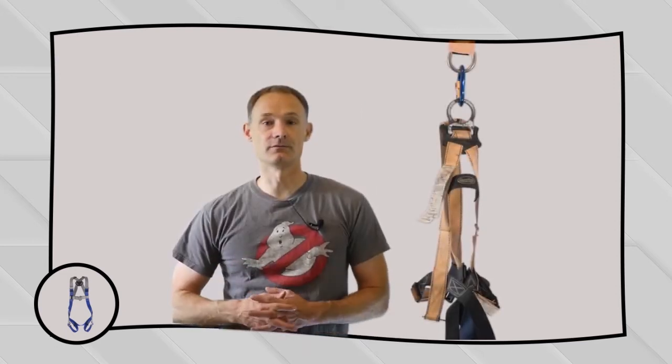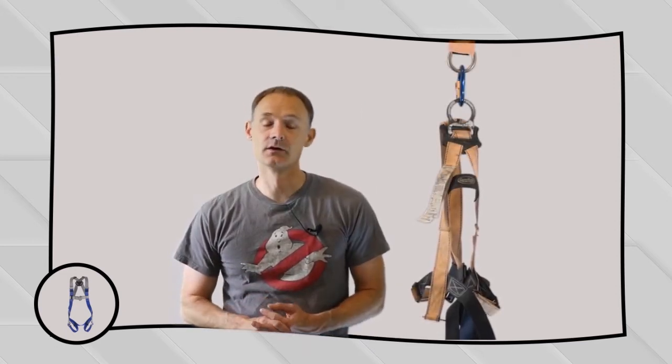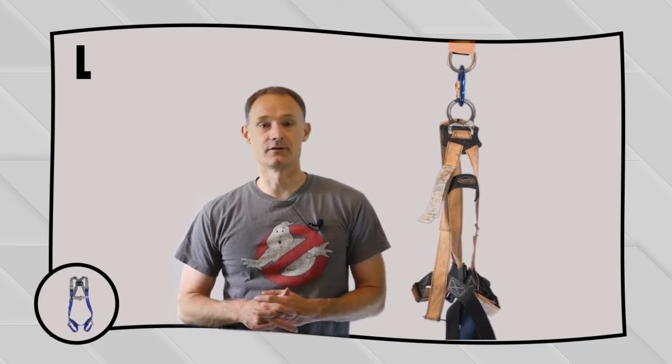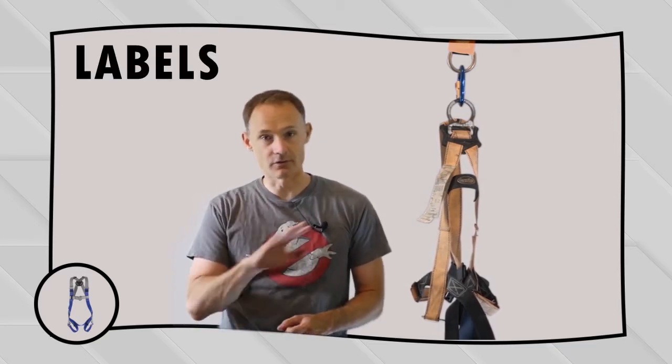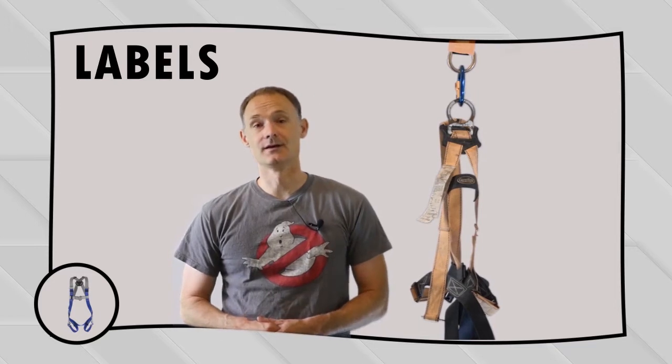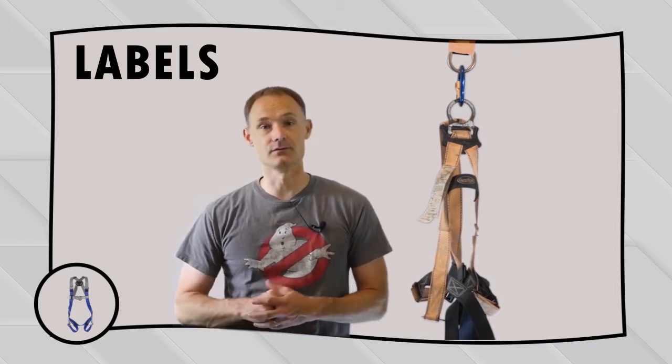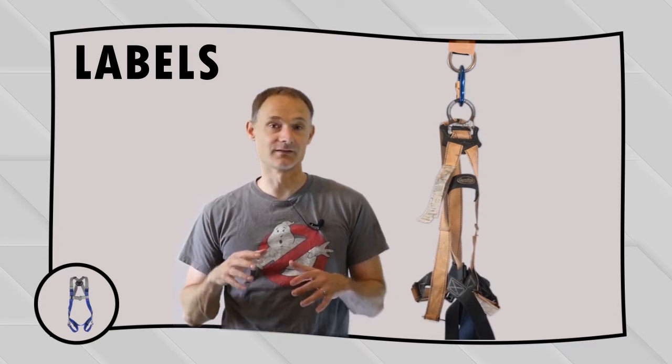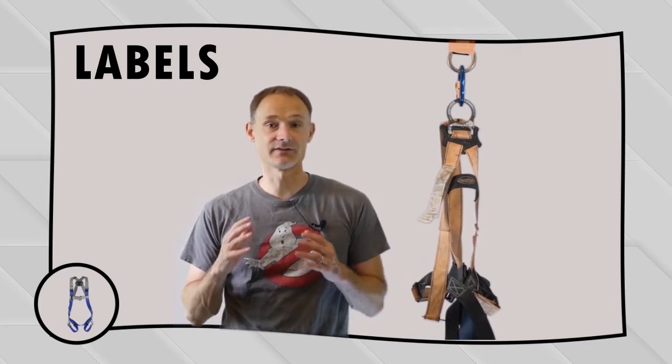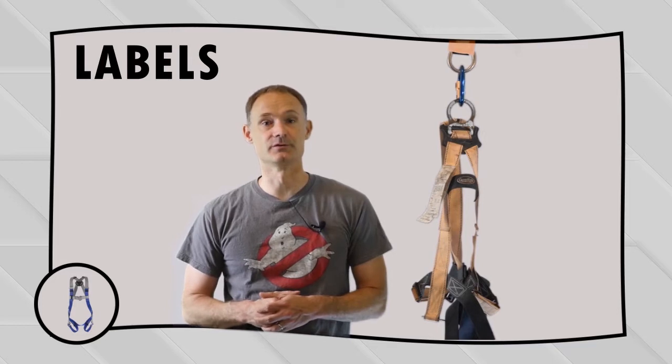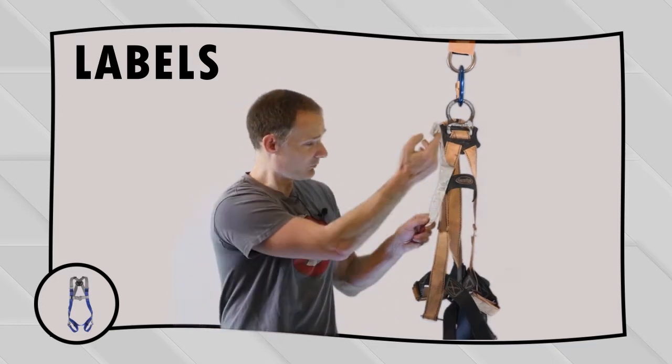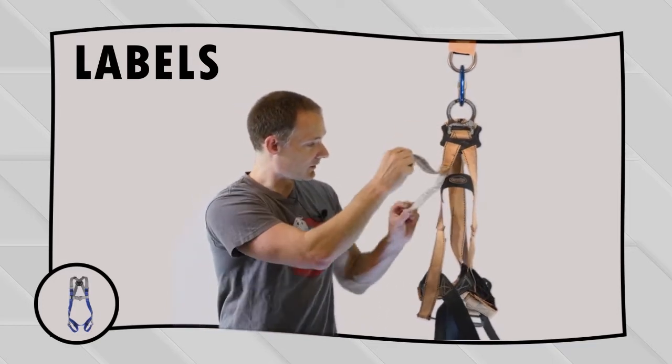So let's walk through a fall protection harness inspection. The first thing to look for in a fall protection harness is does it have a label? This is true across the board with all safety equipment. If it doesn't have a label or if that label is not readable, you can't use it. It doesn't matter how good a condition the actual equipment is in, you have to have that label and it must be legible. In this case the label is pretty dirty, it's pretty worn, but it's there and it's readable.